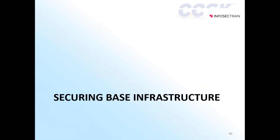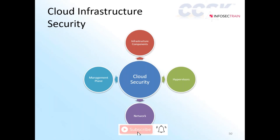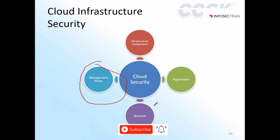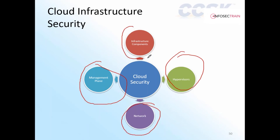When securing the base infrastructure — whether a public or private cloud — there are basically three underlying components to lock down to ensure users have a secure cloud experience. We have to make sure we have enough security for the management plane. There is a network, hypervisors, and infra components that everything runs on, plus a management plane.